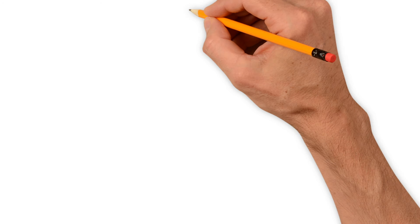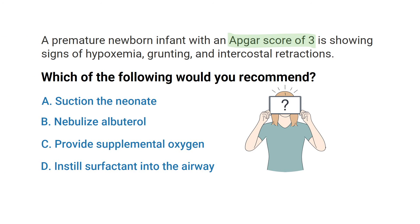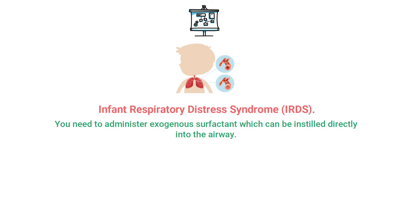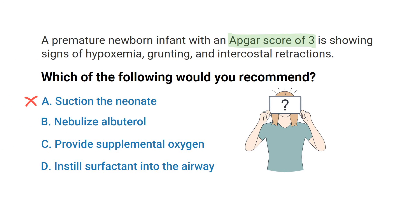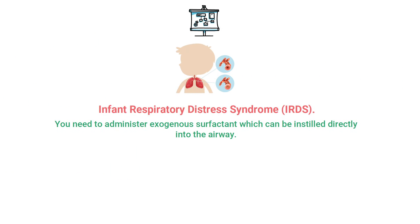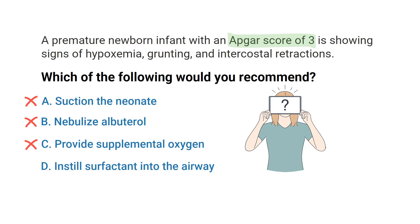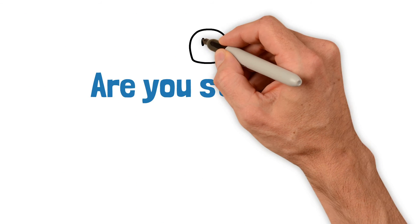This infant is showing signs of severe respiratory distress, and an extremely low Apgar score of 3 tells us the neonate most likely has infant respiratory distress syndrome. To improve the infant's condition, you need to administer exogenous surfactant, which can be instilled directly into the airway. There are no indications for suctioning, and albuterol is not indicated. Although supplemental oxygen may help with hypoxemia, with severe respiratory distress more extensive measures are needed. The correct answer is D) instill surfactant into the airway.